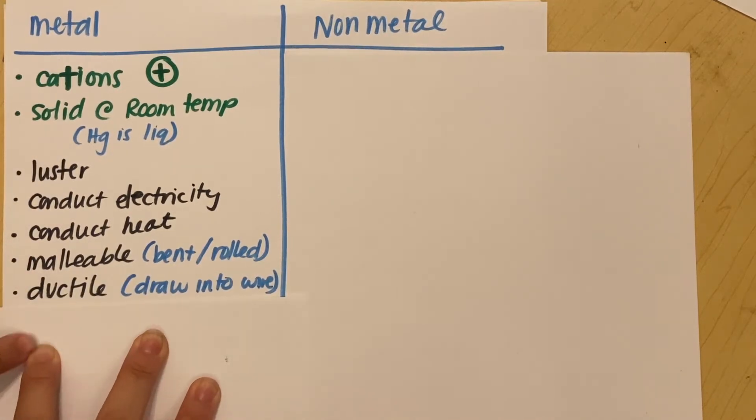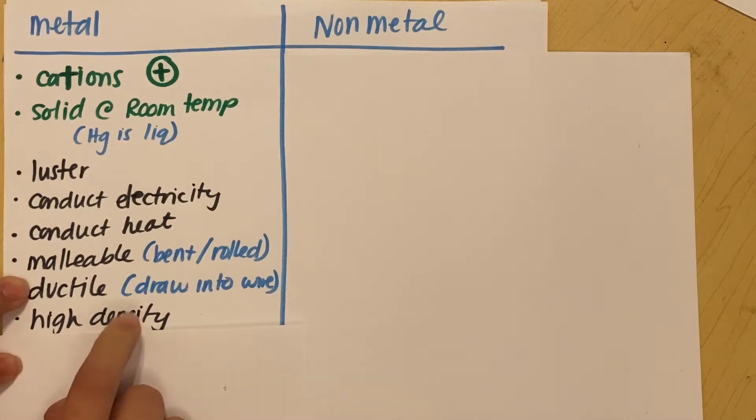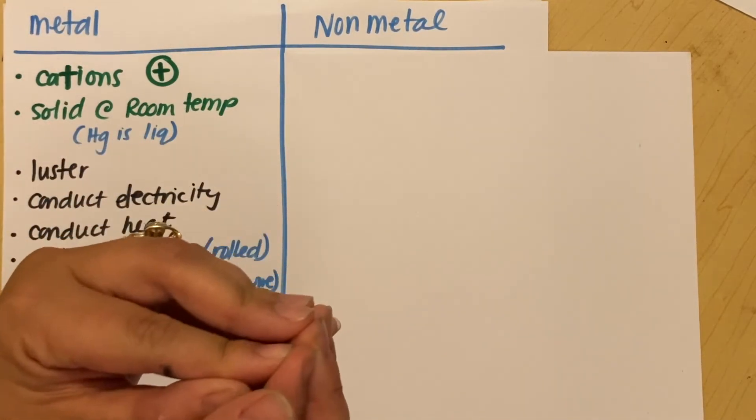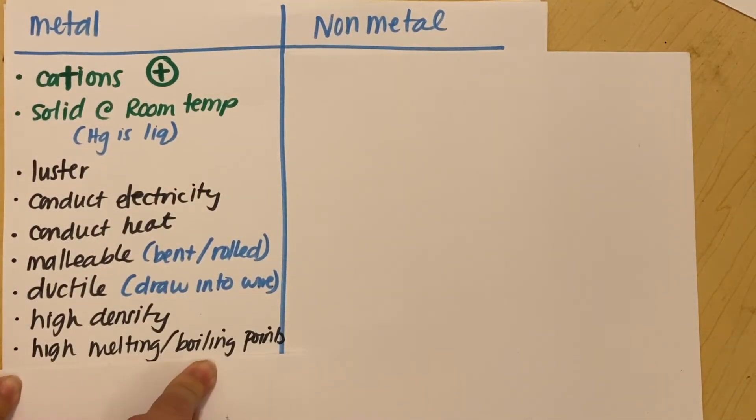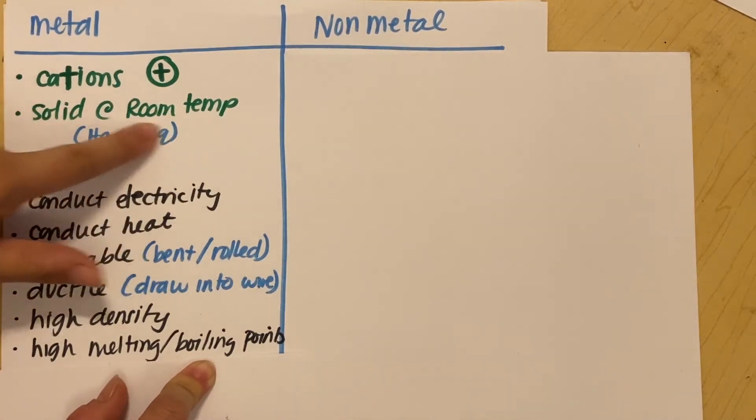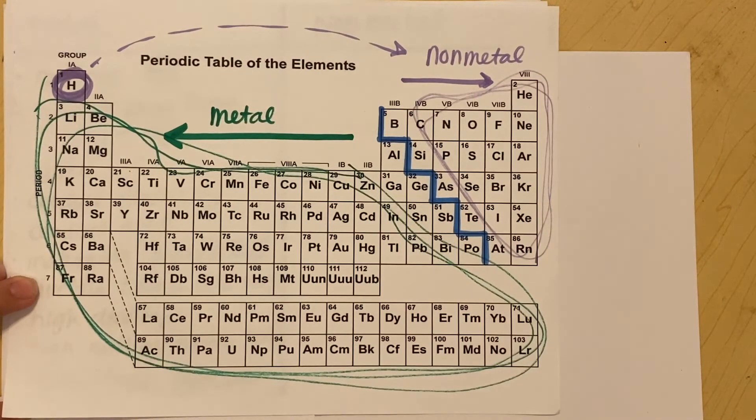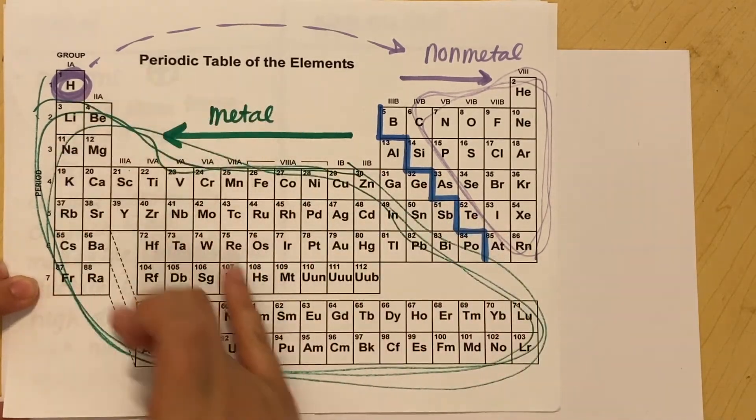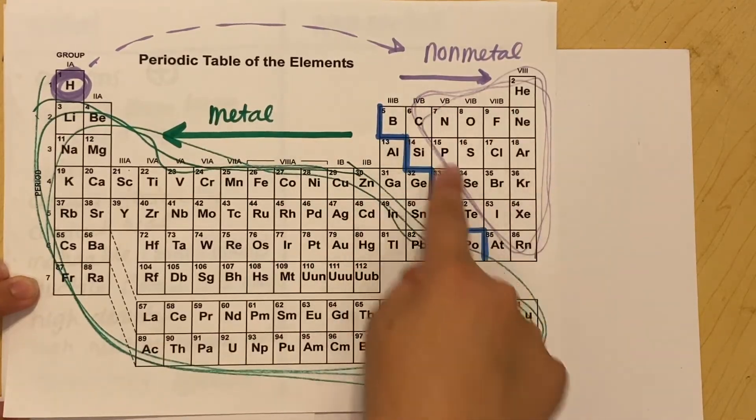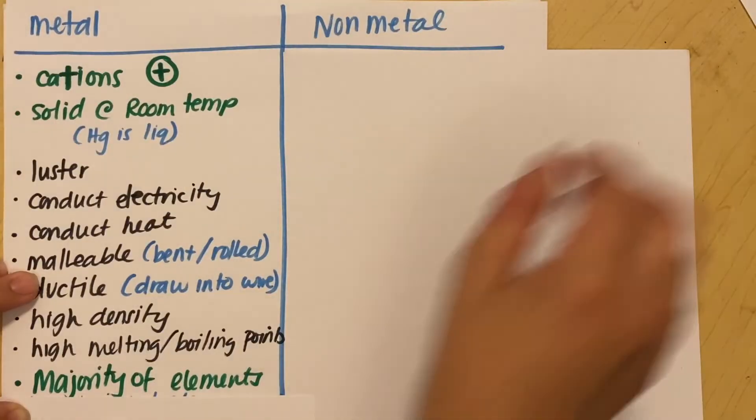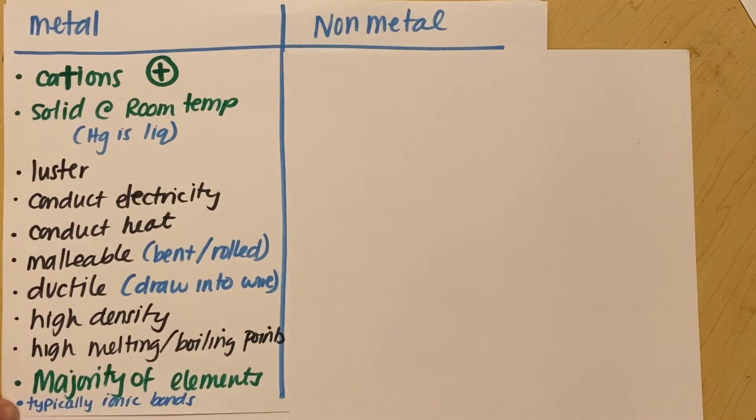Ductile is kind of a similar idea as malleable. It just means instead of bending it, you're able to draw it into a wire. Metal has a high density. So those solid metal particles are much more compacted than non-metals. Metals have high melting and high boiling points, which is kind of why metals are solid at room temperature, right? Metals are actually the majority of the elements on our periodic table. So if I look at this beautiful situation, all these guys here are metals. There are a lot of metals in comparison to this tiny amount of non-metals. So majority of elements are in fact metals. And last but not least, metals are typically involved in just ionic bonds. There are some covalent bonds when they're in like polyatomic ions. But typically if you see a metal, you can easily assume it's going to be an ionic bond. Typically.